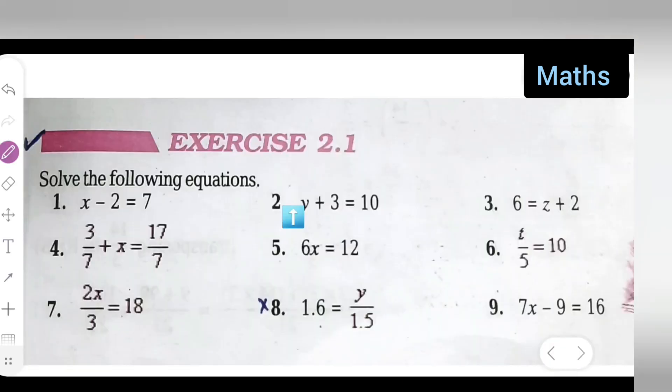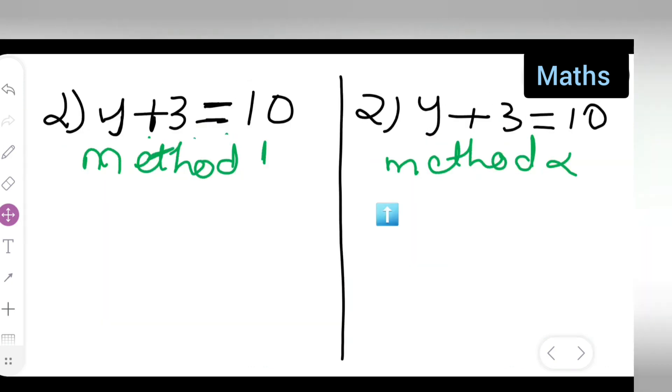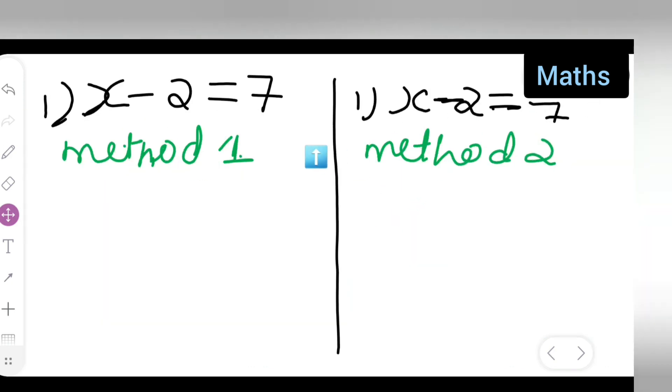Now basically I have only these methods I will be solving for you all. So, question number 1, question number 2 and question number 3. These are the 3 I will be solving. So, I can just take down the question that is solve the following equation. First one is x minus 2 is equal to 7.